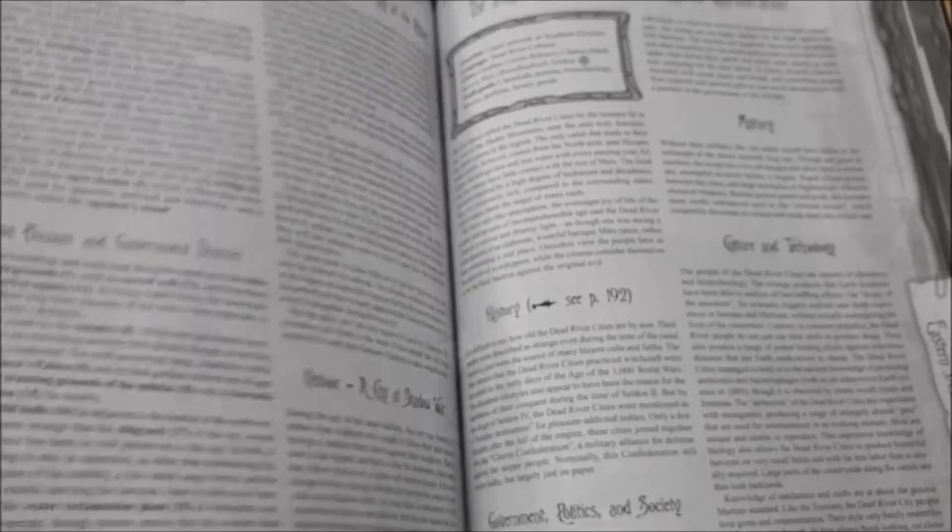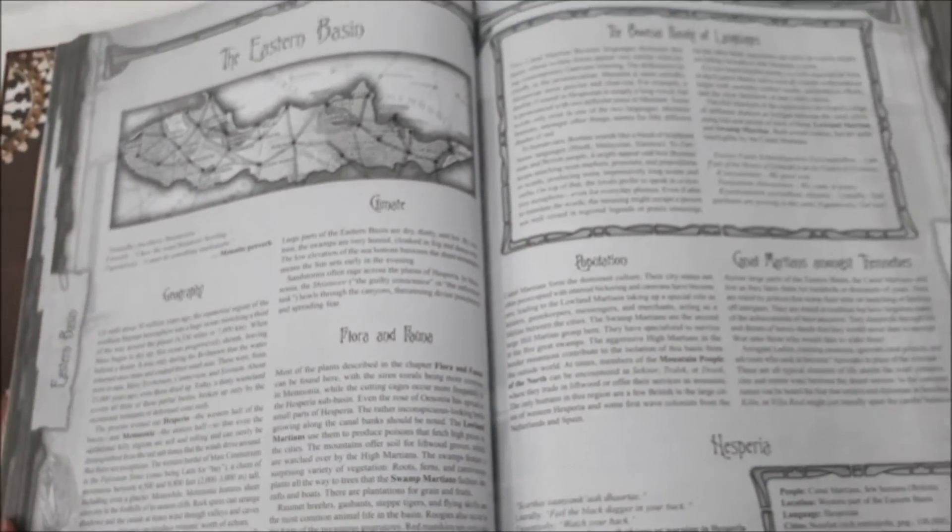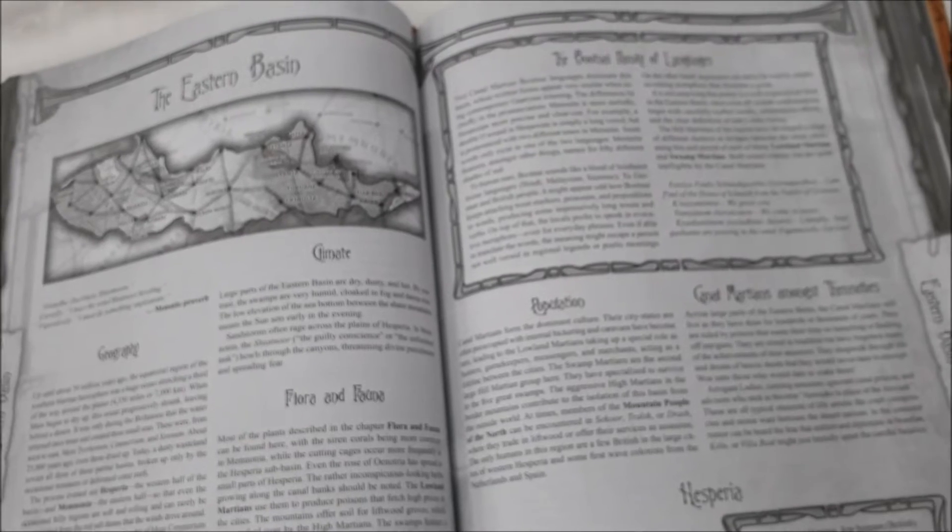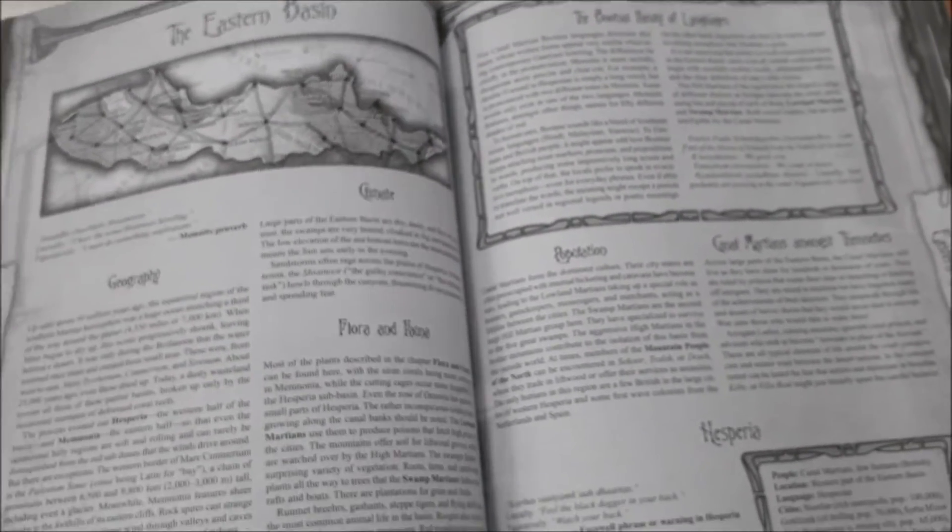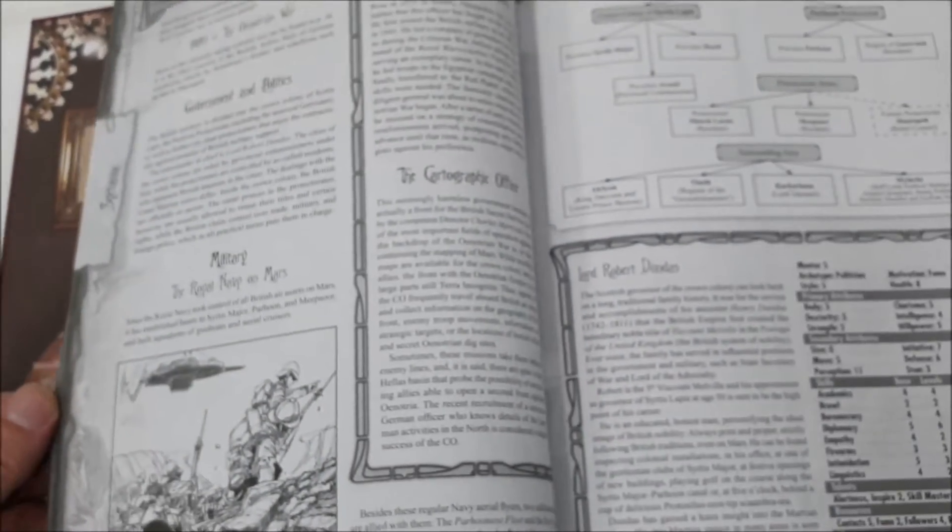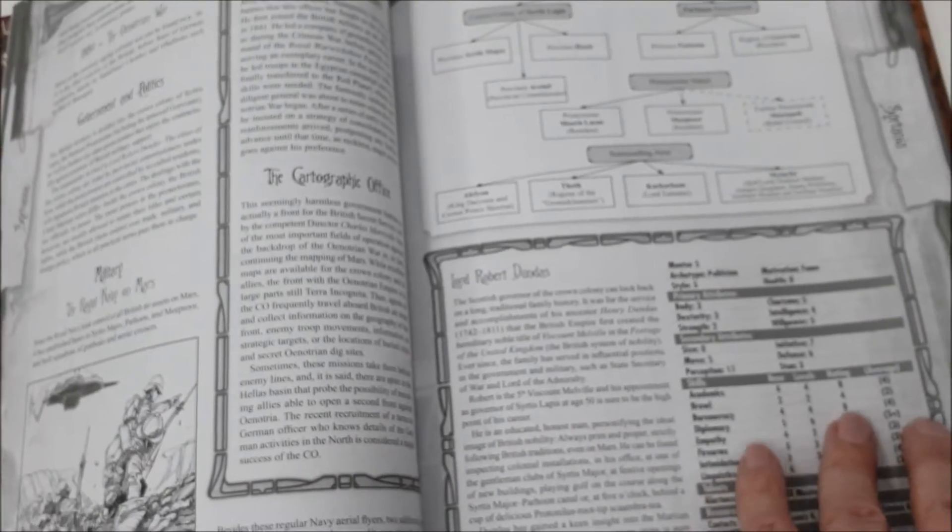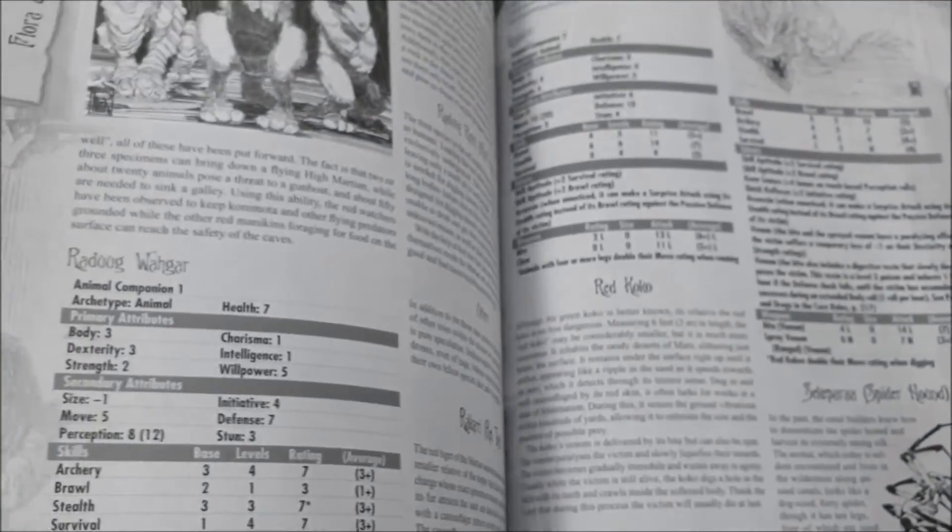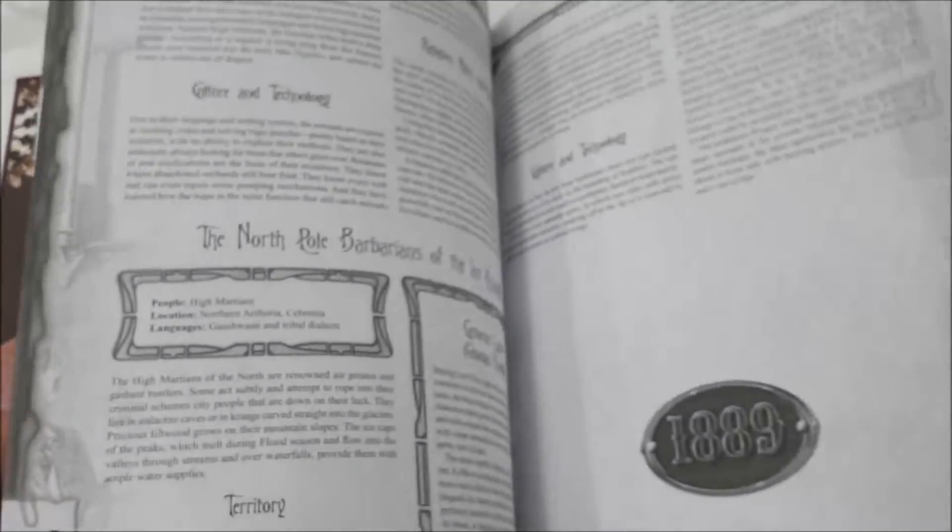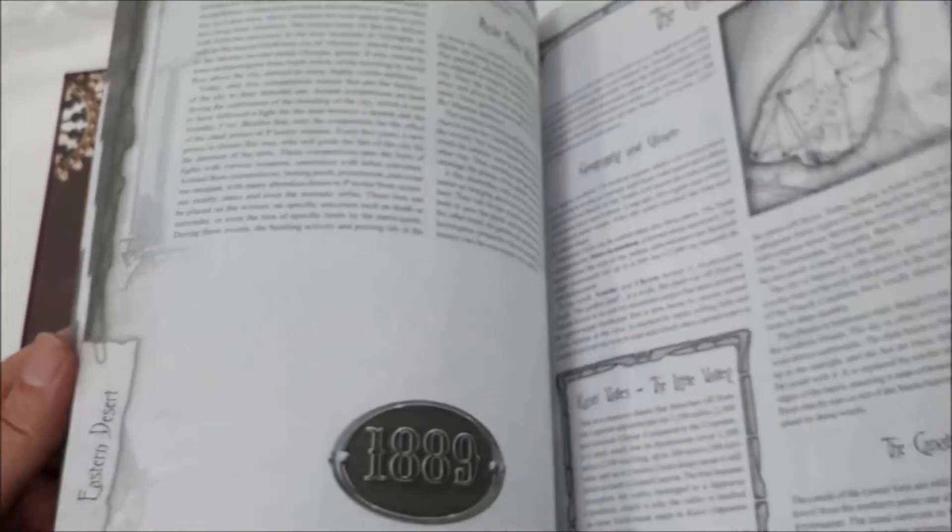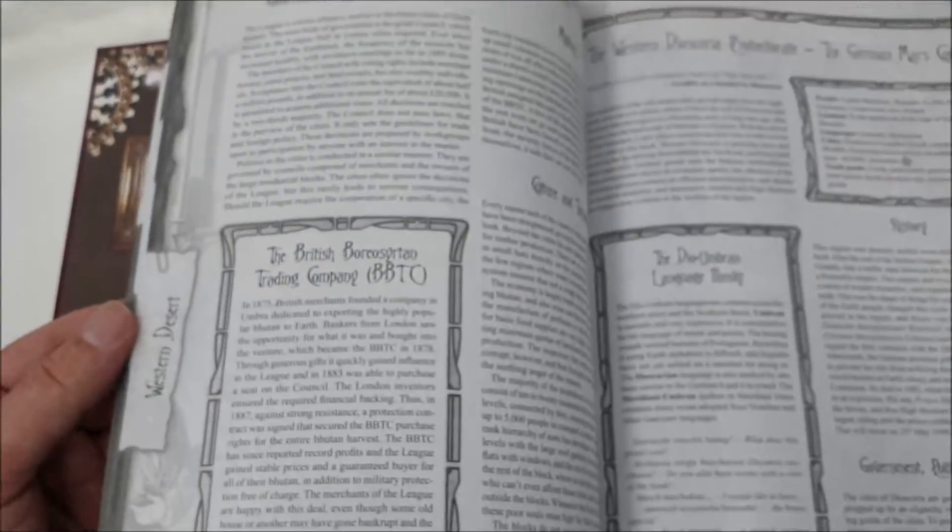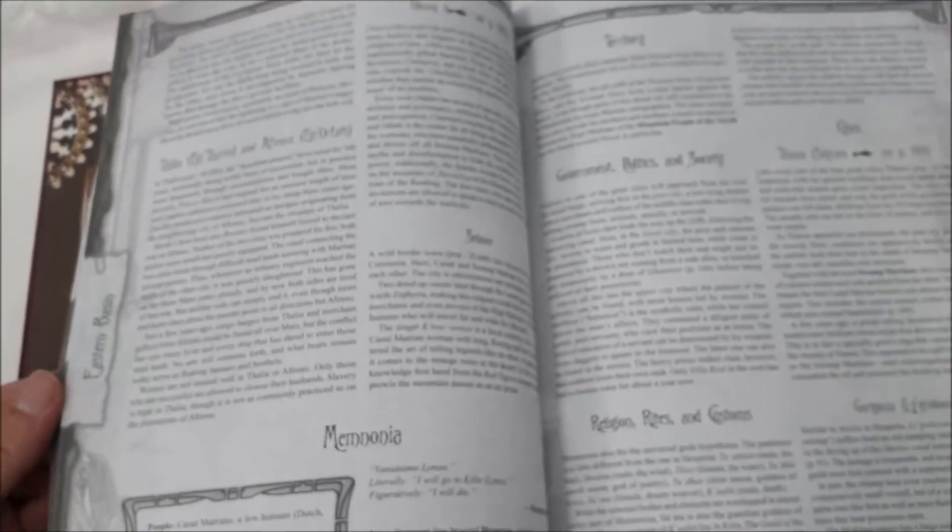And they have been running Kickstarters to translate them into English. And unlike other translation projects that I've backed, they do a good job. They are functional, and they read pretty well. They're not perfect, but a lot of care has gone into them. Okay. So there's an awful lot of information in here about Mars and running campaigns on Mars and that sort of thing, expanding the line greatly to cover a different feel than that is presented in the core book by itself.